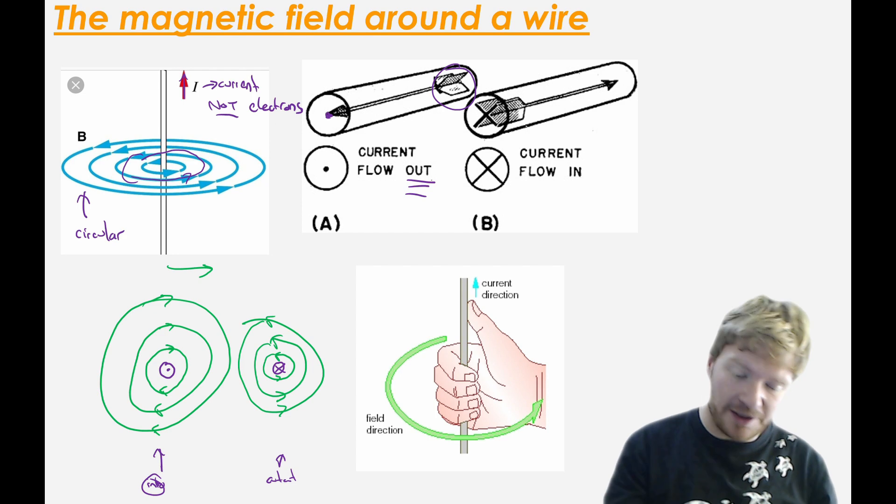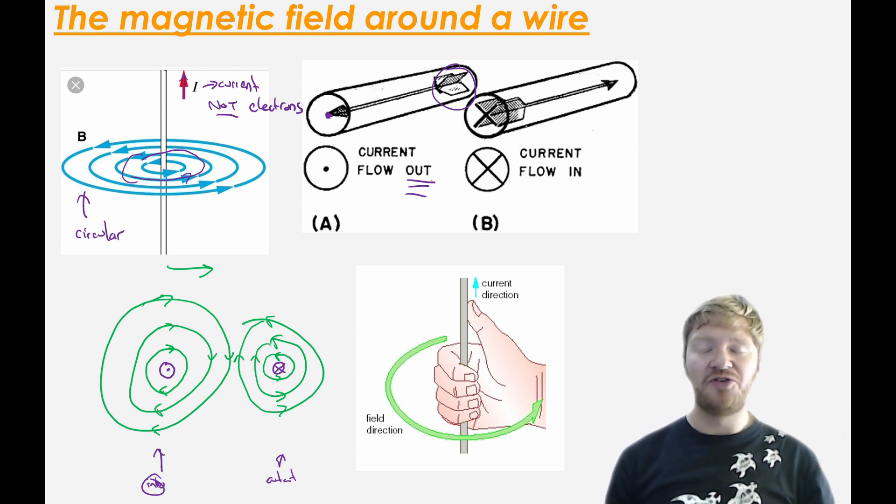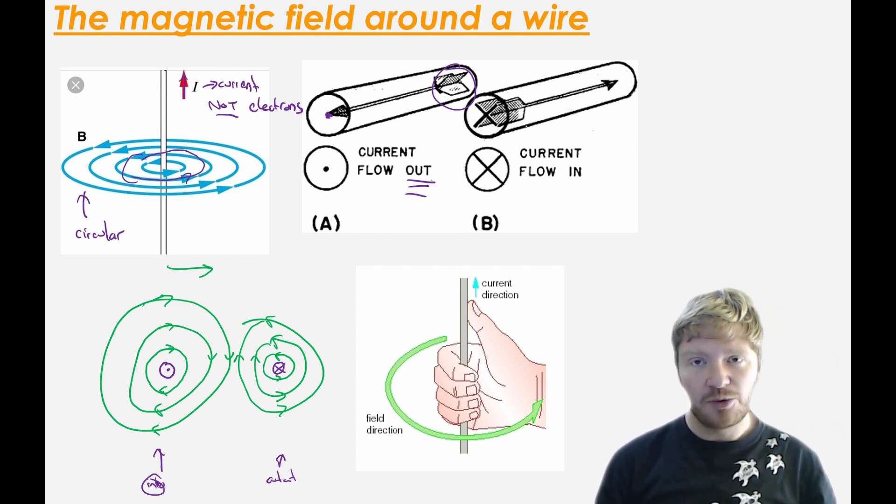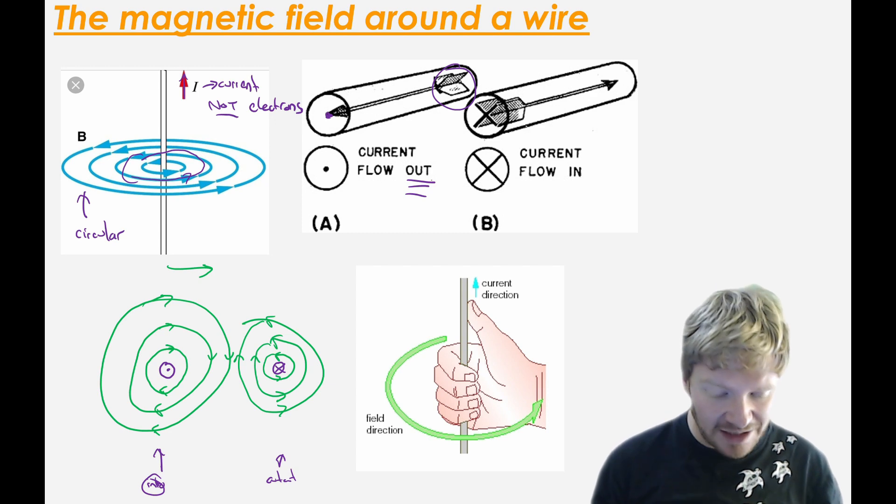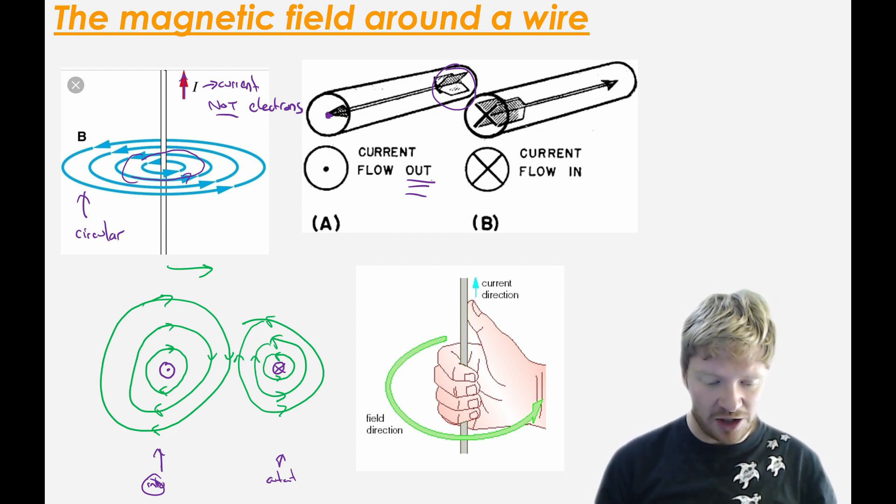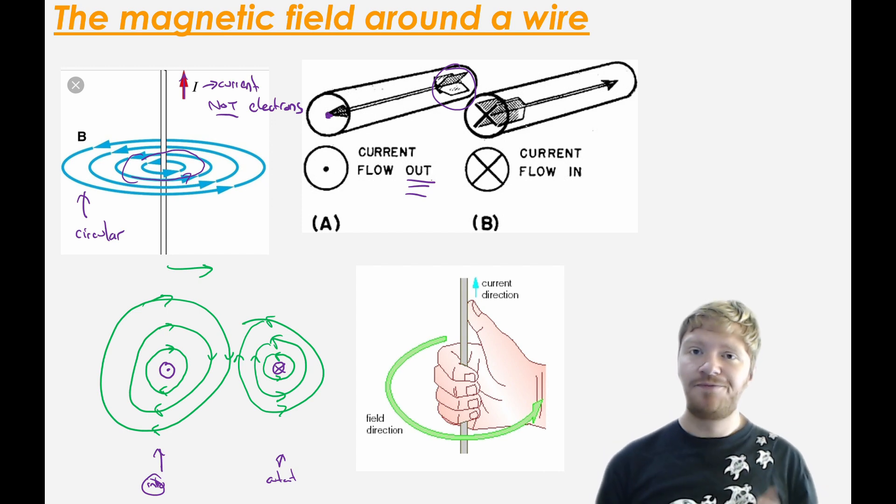Now, I could do something quite cool here. If I look at this bit, I've got fields going one way and fields going the other way. So what I have are opposite fields. So what does that mean? Well, it means that these two fields will attract each other. So these two wires will pull each other together, which is pretty cool.